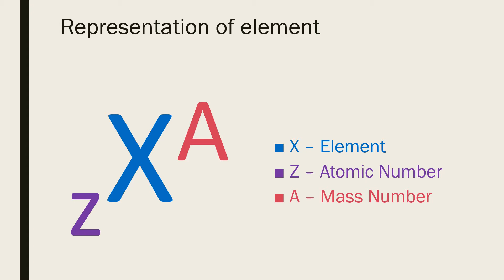The total number of protons and neutrons present in the nucleus of an atom is known as the mass number. It is denoted by A. The value of Z is written on the left-hand bottom corner of the symbol representing the element X, and the value of A is written on the right-hand top corner.